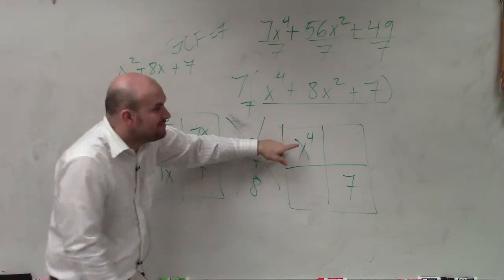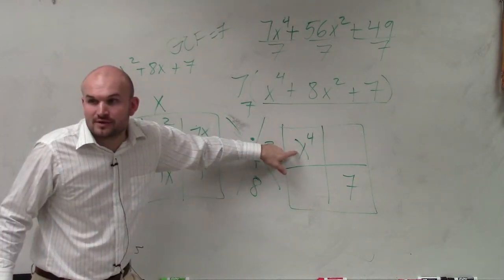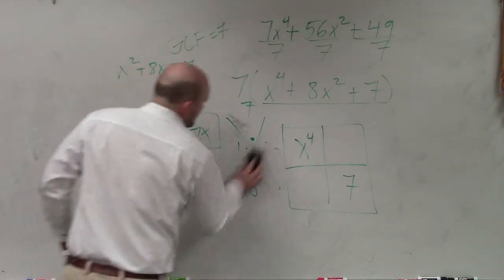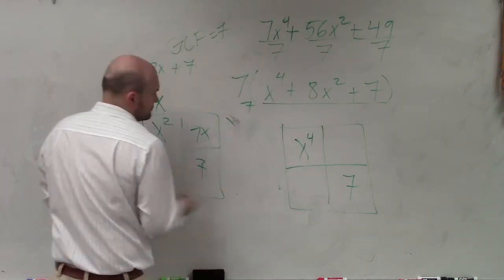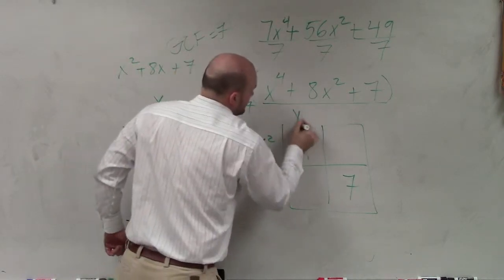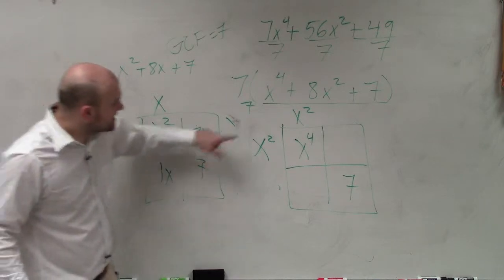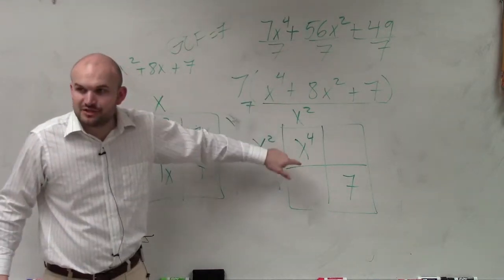So what is going to be on the outside of this one? x to the 4th? x squared and x squared. You guys see that? Because x squared times x squared gives you x to the 4th.